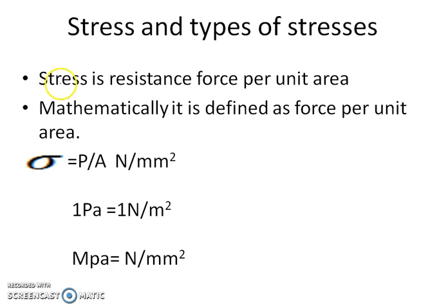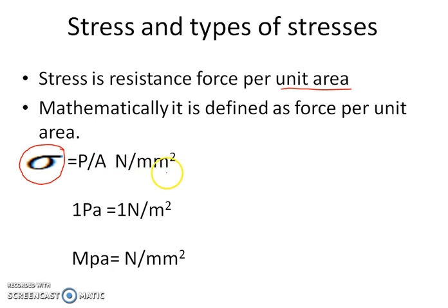Stress is the resistance force per unit area, mathematically defined as force per unit area. It is denoted by the letter sigma. So sigma equals P divided by A, where the unit is Newton per mm². P is the load acting on the member and A is the cross-sectional area. The derived units are Pascal: 1 Pascal equals 1 Newton per m², and 1 Megapascal equals 1 Newton per mm².